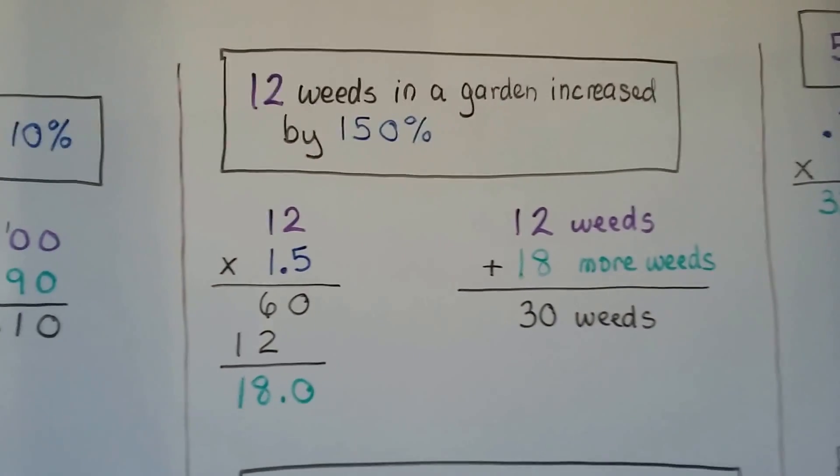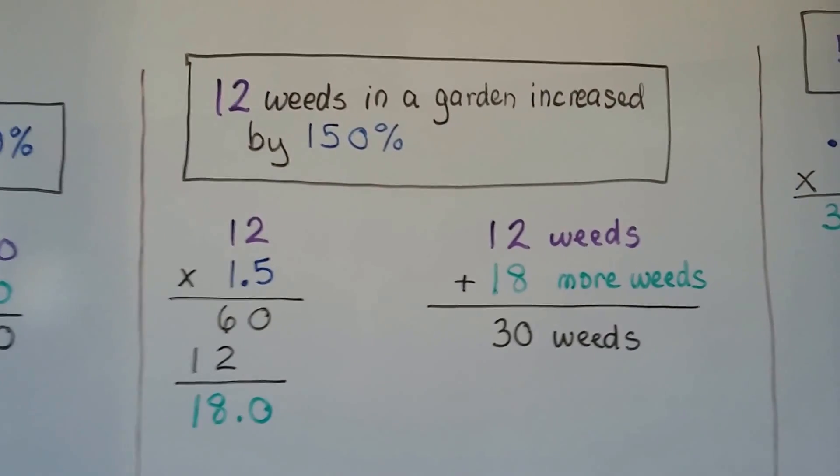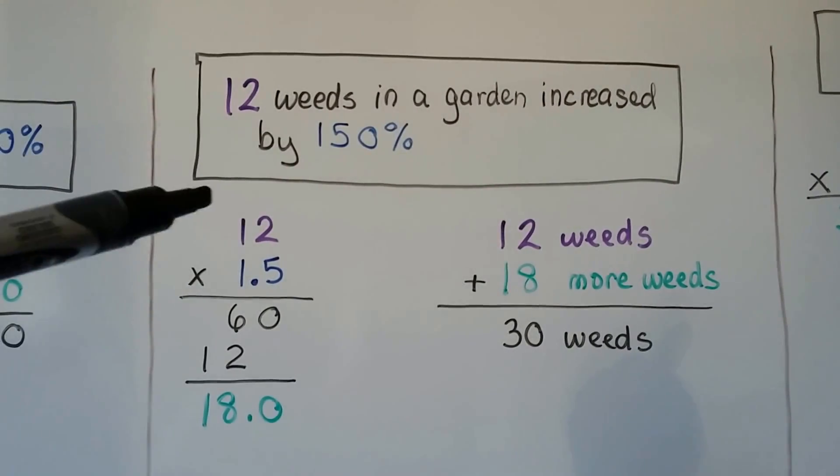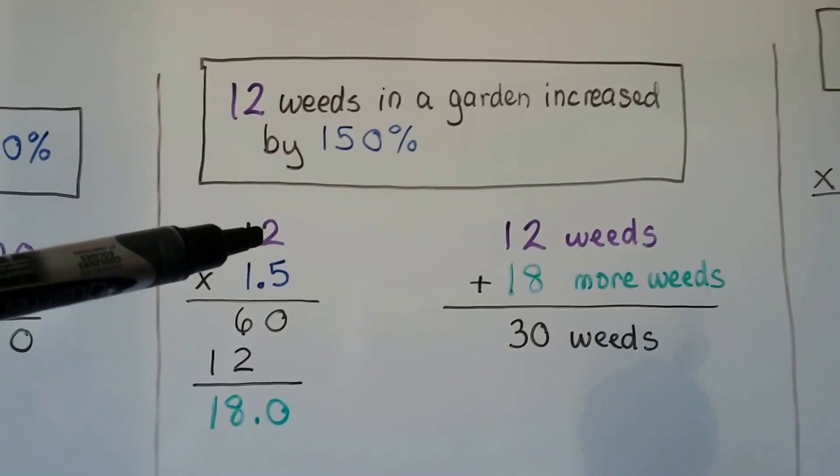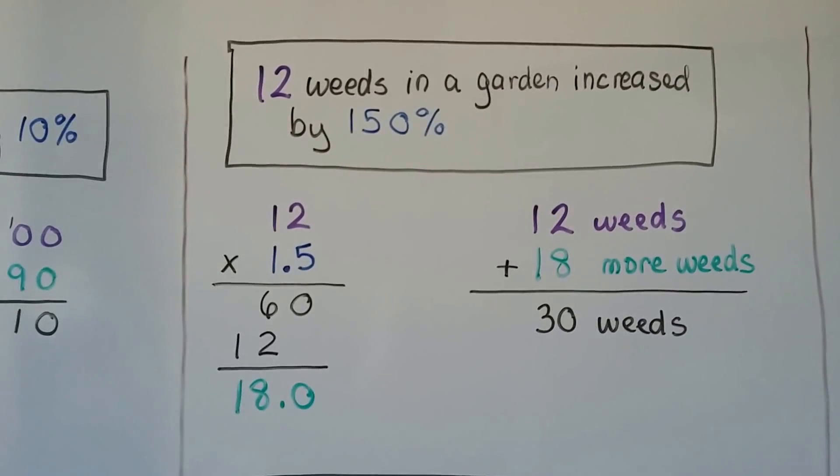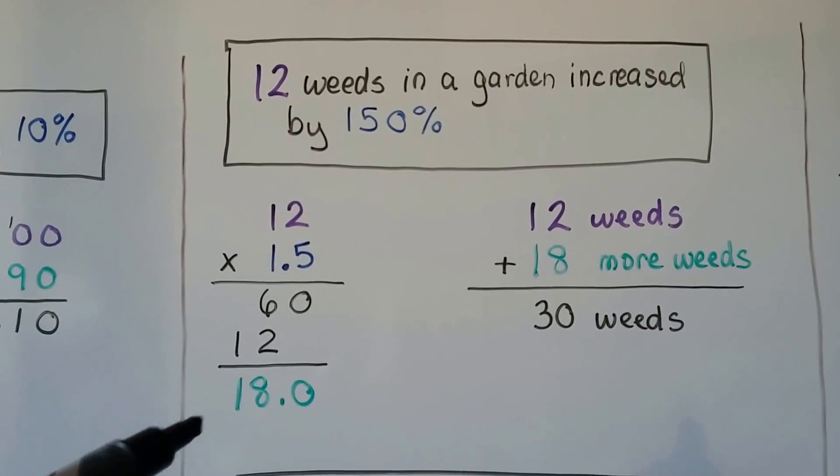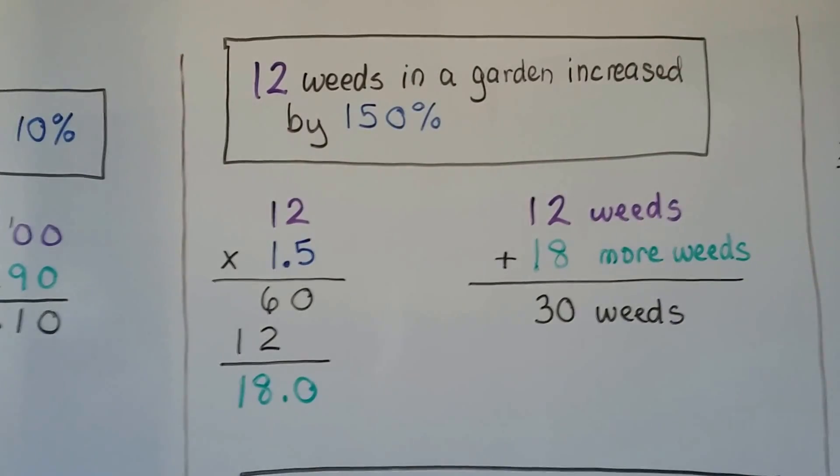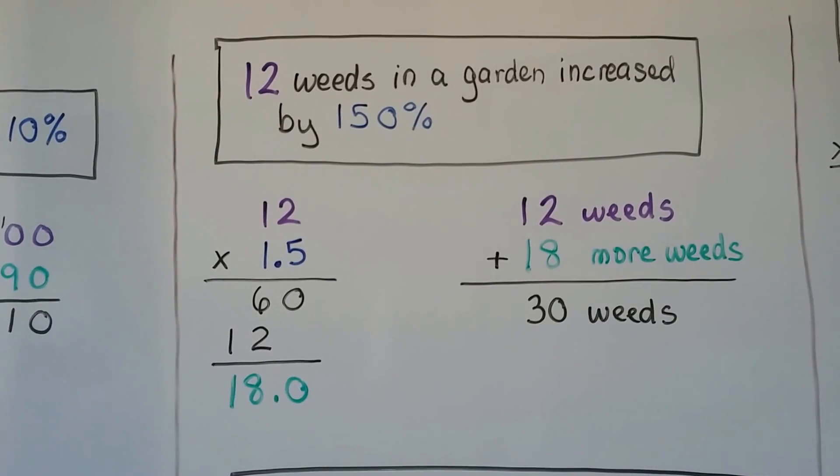If we have 12 weeds in our garden and it's increased by 150 percent, how many weeds do we have now? We do the 12 weeds, the original amount, times 1.5, because that's 150 percent written as a decimal. We get 18. We add the 12 weeds to the 18 weeds, and we find out that there's 30 weeds now in the garden.